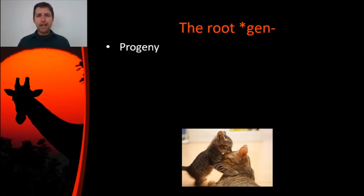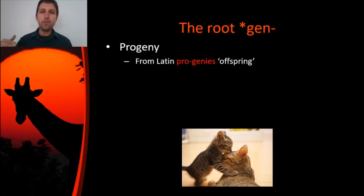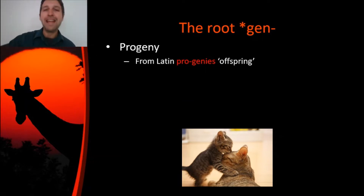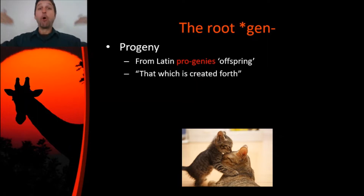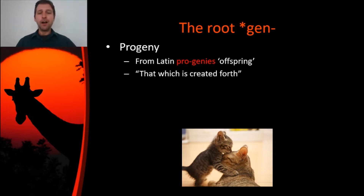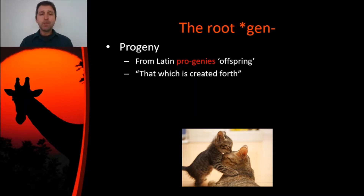What about a word like progeny? Progeny comes from a Latin word progenyase. The pro means forward or forth, and the Gen comes from the Gen root. So what does this mean? It means that which is created forward — forward in time is the idea. Progeny is your offspring, your descendants. That's essentially what it is.